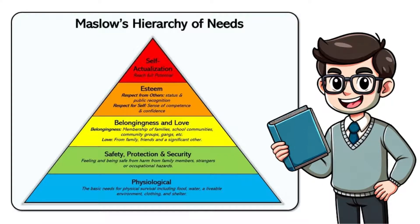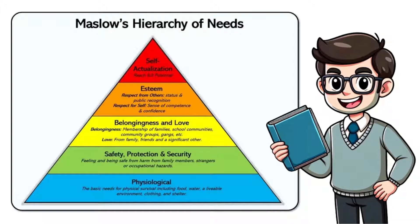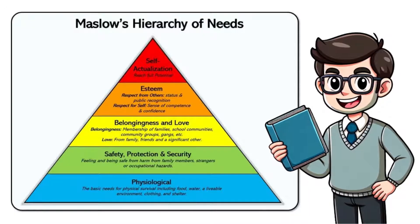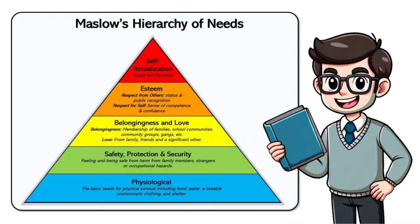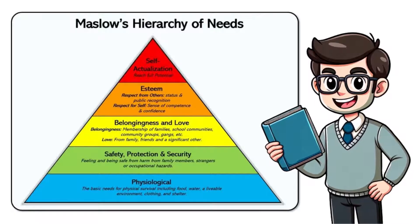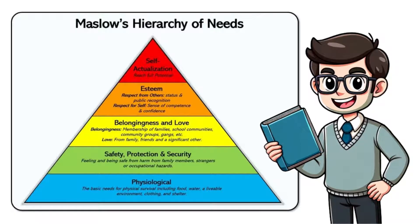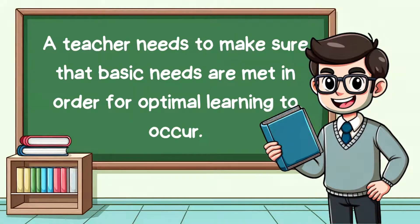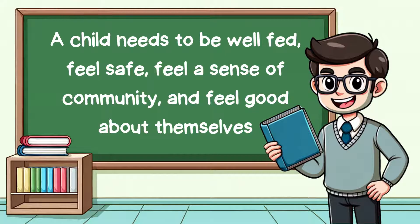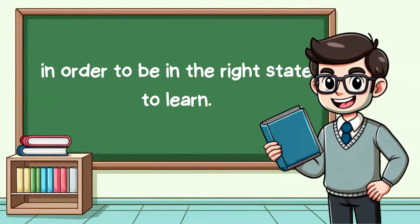The pyramid continues with safety needs, social belonging, esteem, and culminating in self-actualisation at the top. The hierarchy suggests that people need to satisfy lower-level needs before progressing to higher-level ones. In a classroom setting, this means a teacher needs to make sure that basic needs are met in order for optimal learning to occur. A child needs to be well-fed, feel safe, feel a sense of community, and feel good about themselves in order to be in the right state to learn.